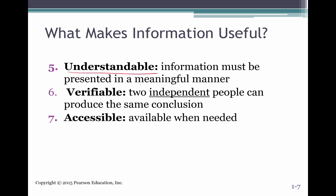Understandability — it has to be presented in a meaningful manner that people can use. Verifiability means that both you and I will come to the same conclusion based on this information. Think of transactions that turn into general journals — if we all know how to record a debit and a credit, and we sell revenue for $100, we're going to debit cash and credit sales revenue. You and I would do that transaction the same way — it is verifiable. Accessibility means it's available to those who need it and when they need it.